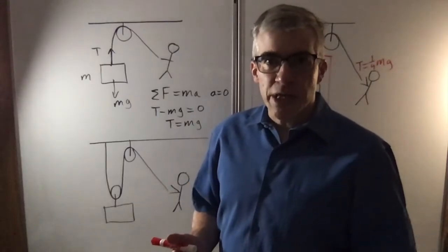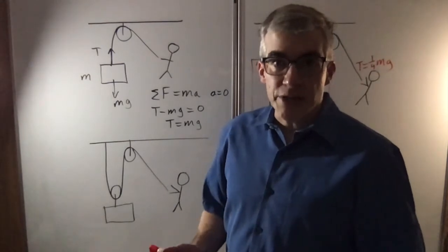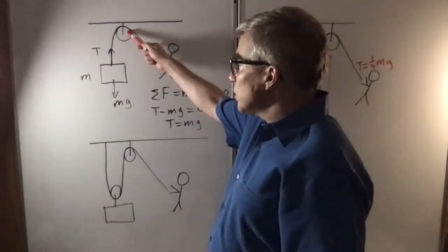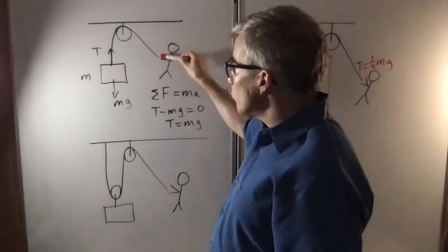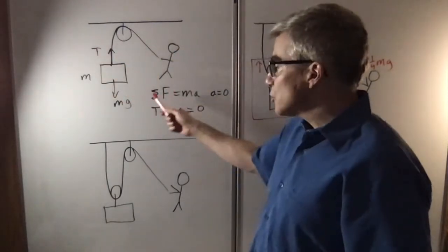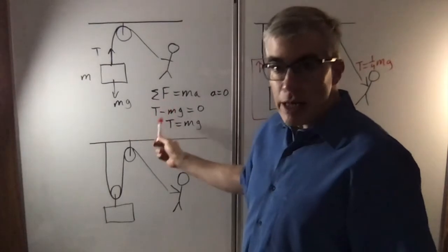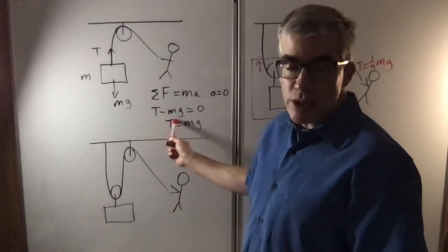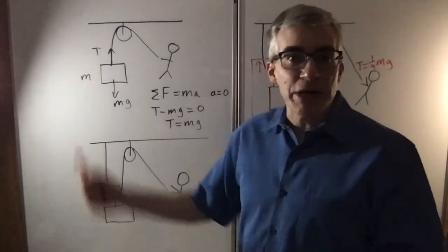Suppose you want to lift something with pulleys and you want to know what's the mechanical advantage. Well, if you have just one pulley here, you're pulling on one rope, one rope is pulling on the mass, so the tension's actually going to be equal to the weight, and you're pulling just as hard as you would if you were lifting directly, you just have better leverage.